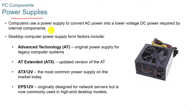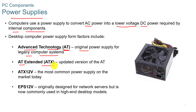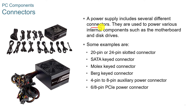Power supplies: a computer needs to convert AC or alternating current power into lower voltage DC or direct current power, as required by internal components. Desktop computer power supply form factors include AT — the original power supply for legacy systems — ATX, which is the updated version, ATX 12 volt, which is the most common power supply on the market today, and EPS 12 volt, originally designed for network servers but now commonly used in high-end desktop models.